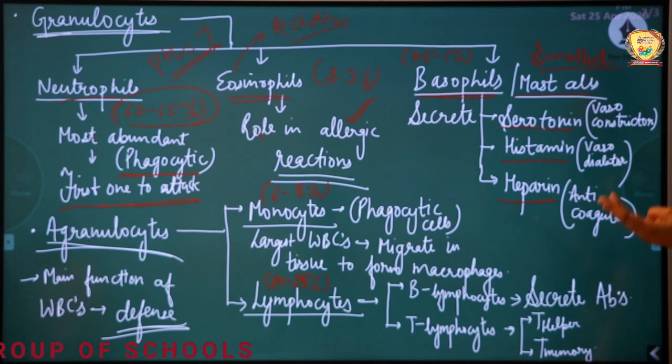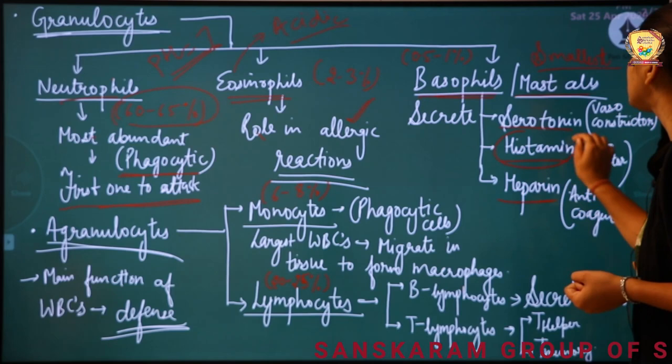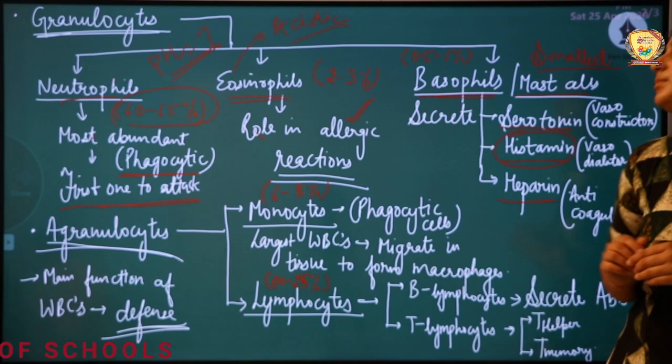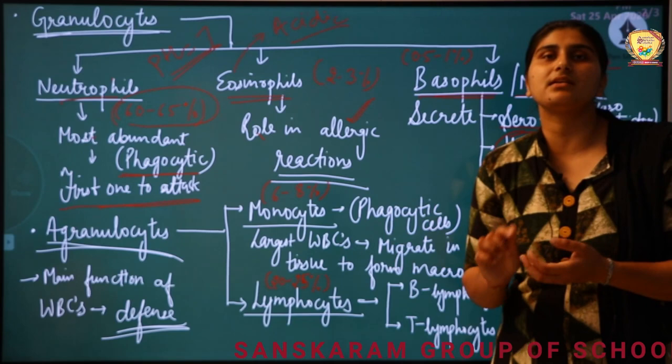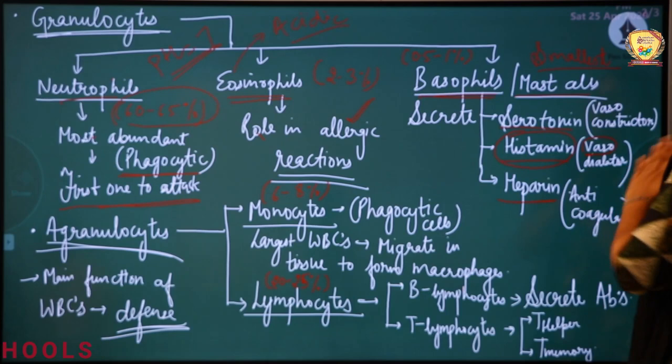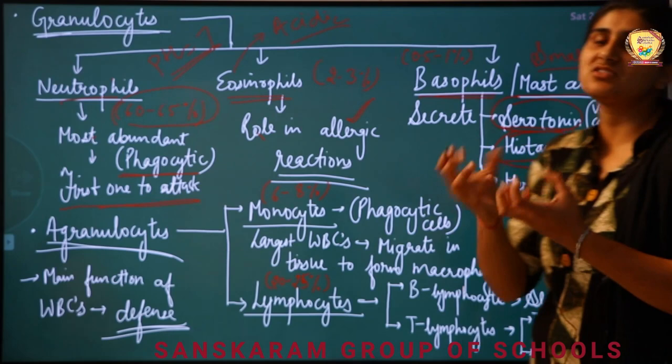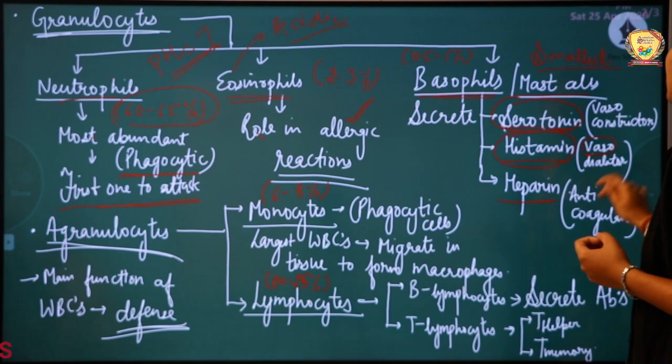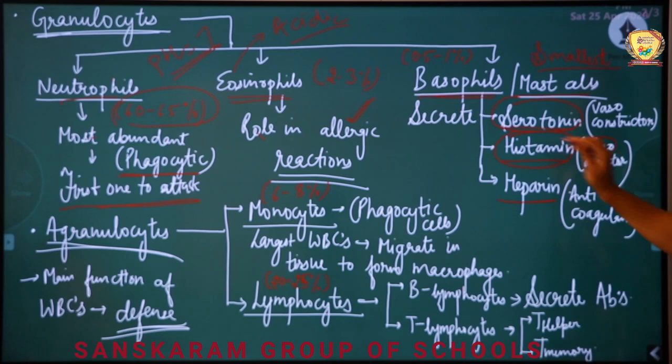All three functions must be understood clearly. Starting with the very important histamine — histamine is a vasodilator. Vaso means vessel, and dilator means to dilate or increase. So it will increase the diameter of blood vessels. Second is serotonin, which will constrict or decrease the blood vessel diameter. So one increases vessel diameter and the other decreases it.